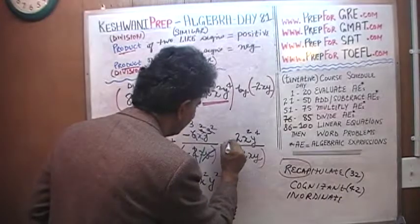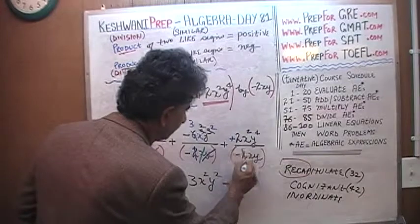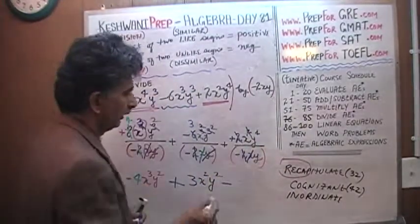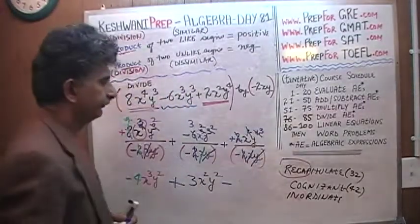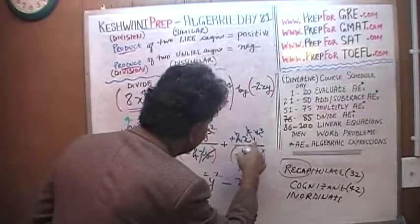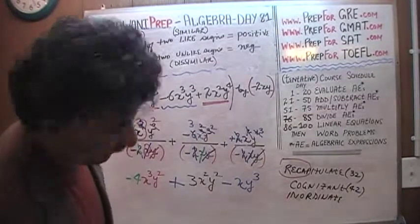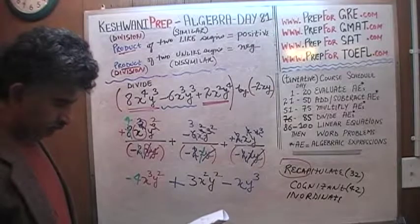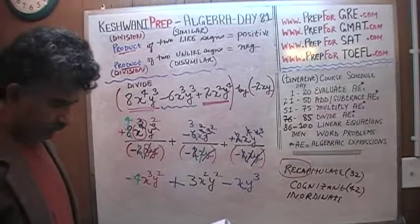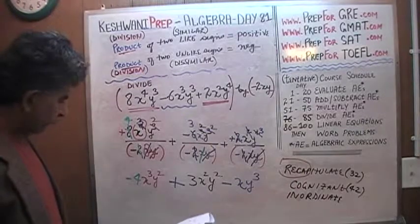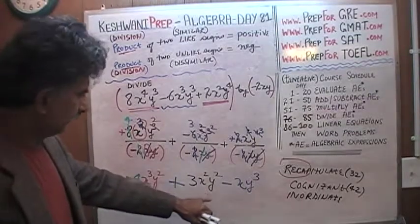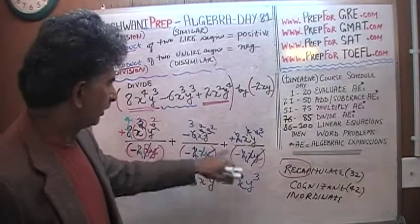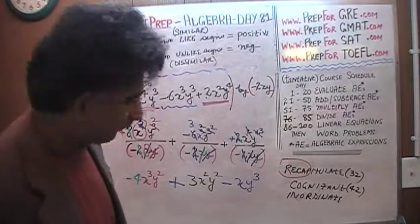For the third term, we have positive 2 divided by negative 2 — positive divided by negative is negative, and the 2 cancels out. x squared divided by x: this x goes away and the power becomes one — just x. y to the 4th divided by y: the y disappears and the power becomes 3 — y cubed. So we are left with negative xy cubed. Let me verify: negative 4, positive 3, negative 1 — with x cubed y squared, x squared y squared, and xy cubed. The two-thirds in my notes is wrong; it's just two divided by two, which is one. So that's your answer.